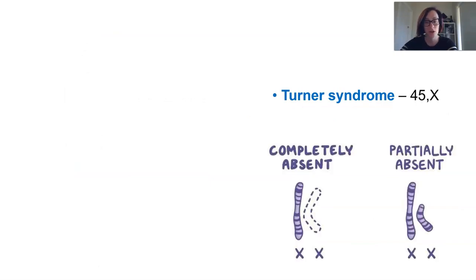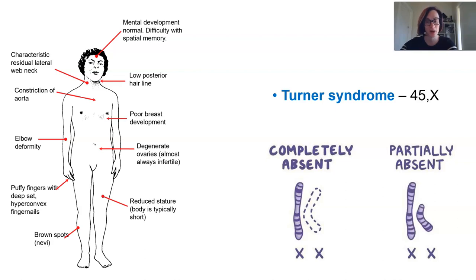Turner syndrome occurs when the only sex chromosome present is an X chromosome, or potentially one X chromosome and a partial X. People with Turner syndrome generally present as biological females, so they have those physical characteristics, but they're short, they have some developmental delay, and other distinct issues with different organ systems in their body.